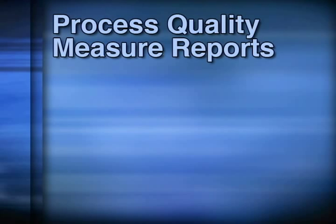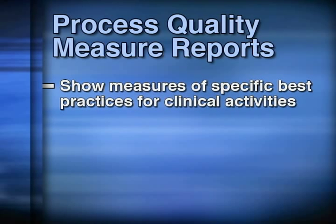OASIS-C process measures focus on high-risk, high-volume, problem-prone areas for home health care. Process data items will be used to generate a process quality measure report, which will contain information on multiple process quality measures, measuring specific best practices for clinical activities including assessment, care planning, care coordination, clinical interventions, education, and prevention.